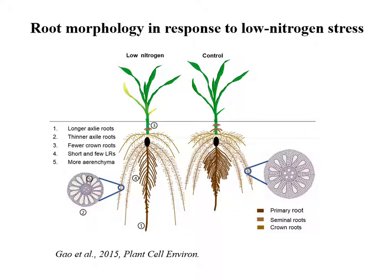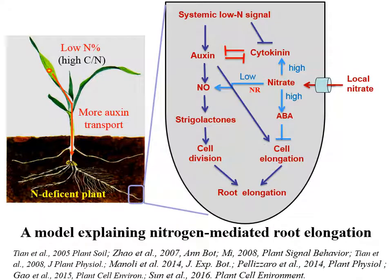In addition to lateral root and axial root growth changes, there are also changes in anatomical structure. Under low nitrogen stress, the root usually becomes thinner and more cortex cells die, forming more aerenchyma.